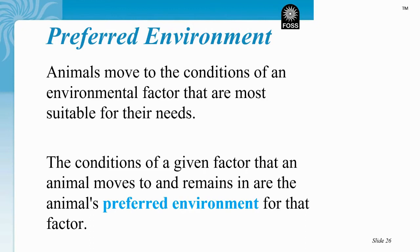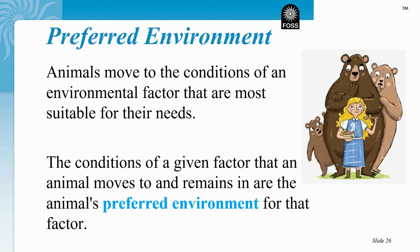Let's learn some more about our preferred environment. Animals move to the conditions of an environmental factor that are most suitable for their needs. So let's think about which soil type isopods preferred — that's going to be their preferred moisture conditions in their environment. Were there more isopods in the dry soil on the left? How many isopods were in the somewhat wet soil in the middle? Did you see the most isopods in the very moist soil on the right? I think these isopods are like Goldilocks — they like soil that is not too dry and not too wet, but just right. The soil in the middle was where we saw the majority of our isopods.